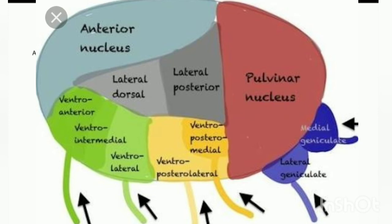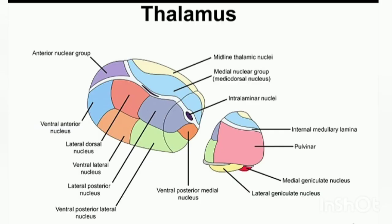The interlaminar nuclei, including the centromedial nucleus, midline nuclei, and reticular nuclei, are also present. The thalamus is known as the great integrating center, where information from all sources is brought together.